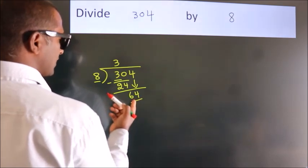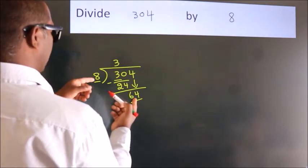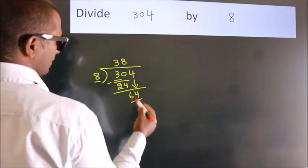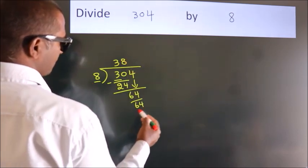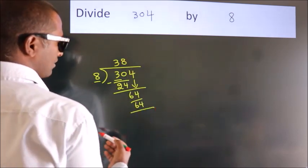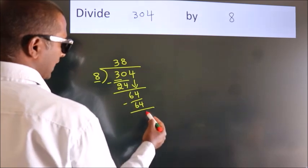When do we get 64? In the 8 table: 8 eights, 64. Now, we subtract. We get 0.